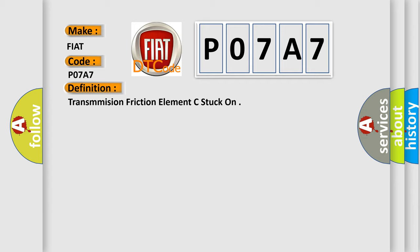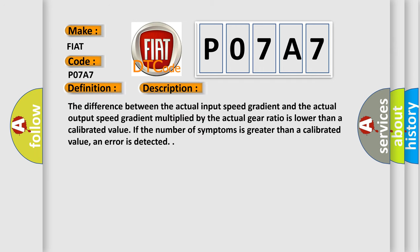And now this is a short description of this DTC code. The difference between the actual input speed gradient and the actual output speed gradient multiplied by the actual gear ratio is lower than a calibrated value. If the number of symptoms is greater than a calibrated value, an error is detected.